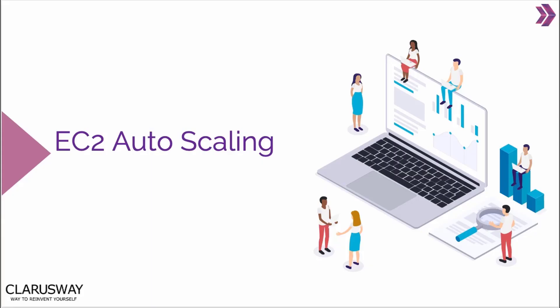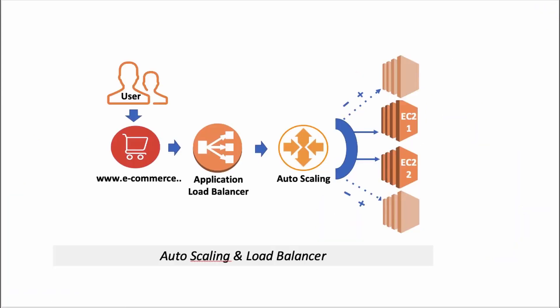Hi everybody, I am Serdar, an AWS and DevOps instructor at Clarus Way. In the previous lesson, we saw how Elastic Load Balancer manages traffic between our existing resources — in other words, instances. But what if we want to automate the increasing or decreasing of our existing virtual machines, EC2s, when demand changes over time? We call this autoscaling, which makes this process in AWS for us.